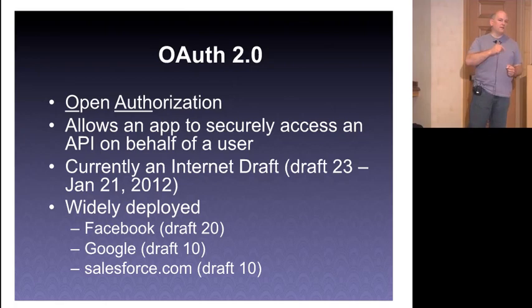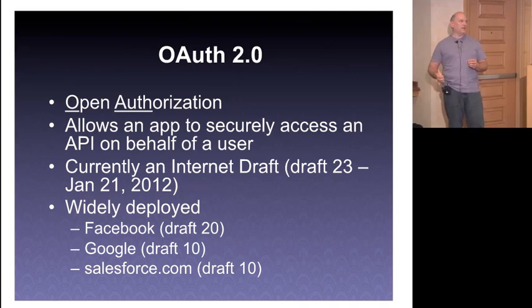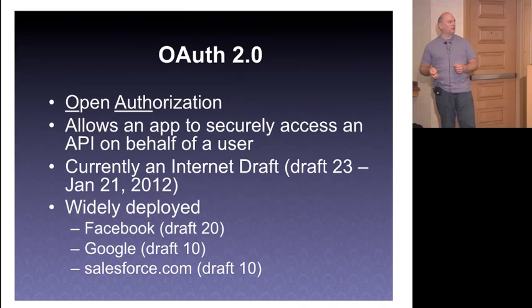OAuth — open authorization — is really widely deployed even in draft form. It's about authorizing an application to access APIs on behalf of a user; authentication is out of scope. It's still an internet draft, we're on draft 23, but Salesforce deployed draft 10 about the same time as Google, and Facebook have deployed draft 20. It's pretty stable — not a lot changes from draft to draft.